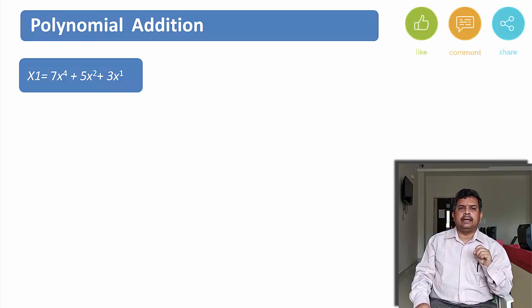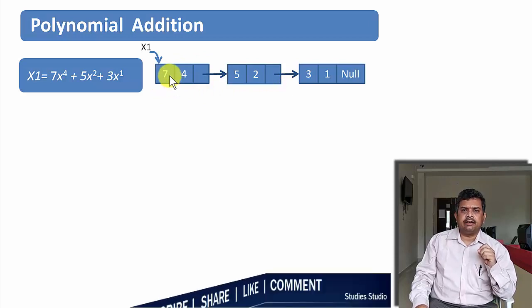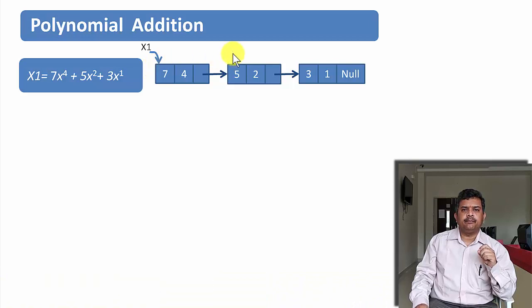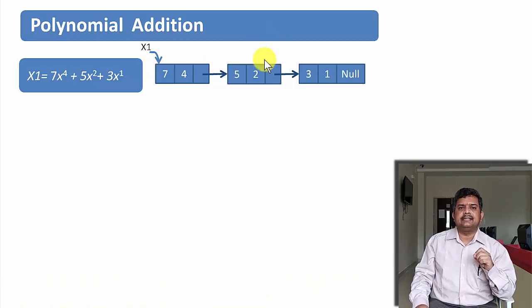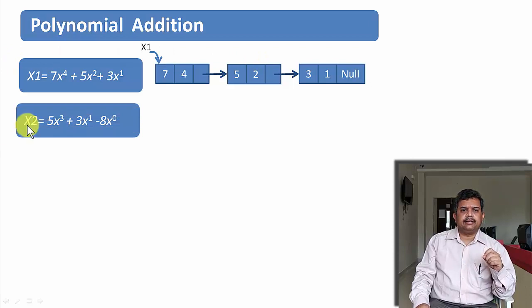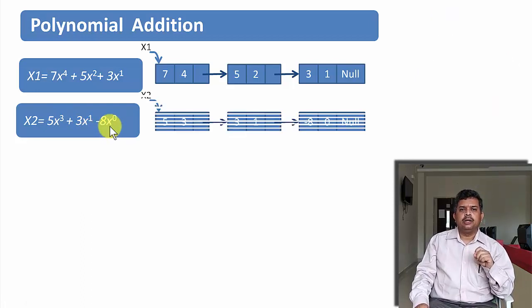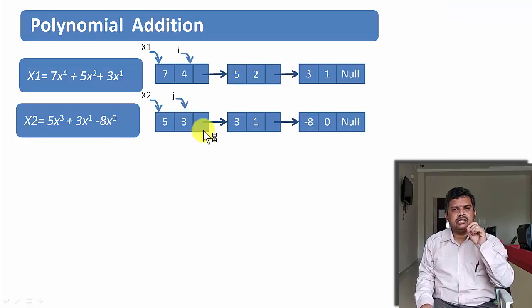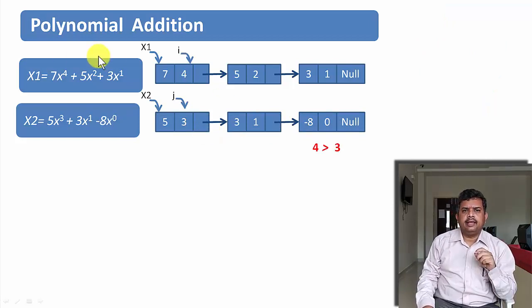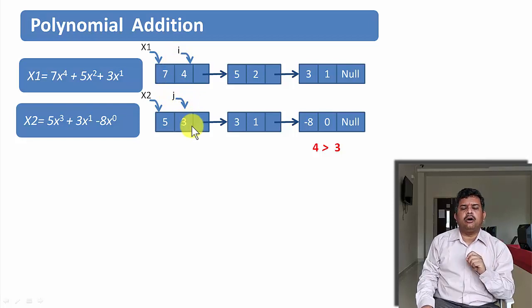Let us directly go to polynomial addition. Let us say x1 is a polynomial: 7x to the power 4, 5x squared, and 3x to the power 1 — represented as a single linked list with coefficients 7, 5, 3 and exponents 4, 2, 1 respectively. Similarly, x2 is another polynomial: 5x cubed plus 3x to the power 1 minus 8x to the power 0. I am taking two pointers, i pointing to the current location in x1 and j pointing to the current location of x2.